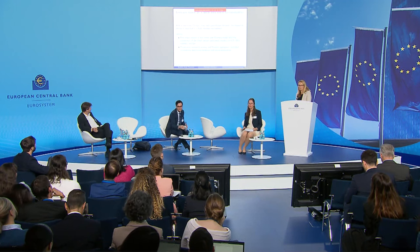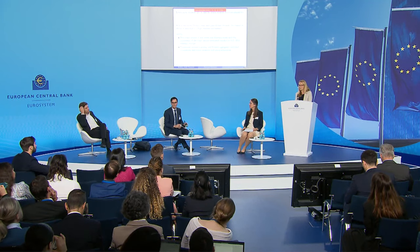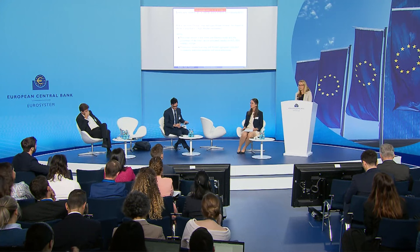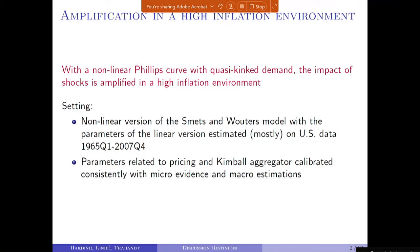Matthias did a very good job presenting the paper. What this paper essentially does is show that when you have a high inflation environment, all shocks get amplified — the transmission gets amplified. When you have a nonlinear Phillips curve versus the standard Smets and Wouters and solve the model really nonlinearly, then you have a quasi-kinked demand, which means that the impact of shocks is amplified in a high inflation environment.